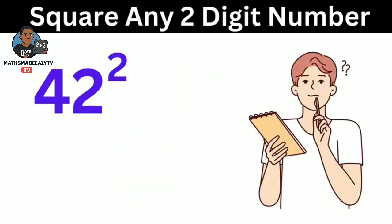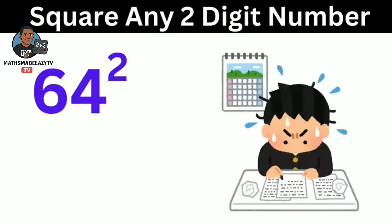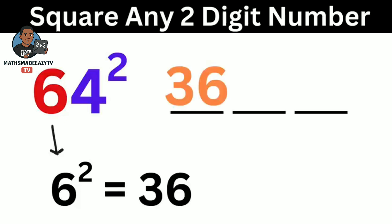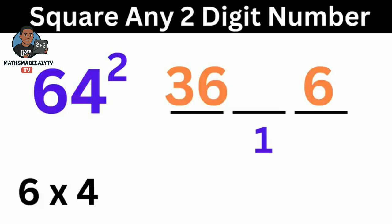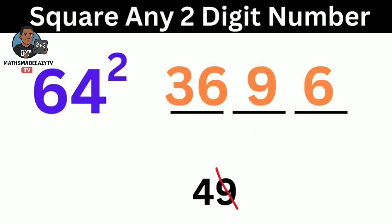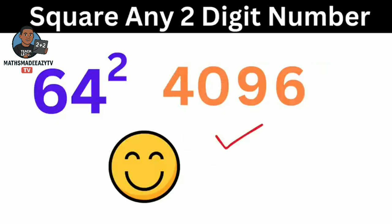Ready for the next example. Now we have 64 raised to power 2. We divide it into 3 parts. We square the 6, which gives us 36, so we write 36 here. Now 4 square gives us 16. We write 6 here and carry 1. For the middle part, we multiply 6 and 4, multiplied by 2, which gives us 48. Then we add the 1 to it, giving us 49, so we write the 9 and carry 4. We add the 4 to the 36, giving us 40. The answer is 4,096. That was faster than a calculator — we are on fire!